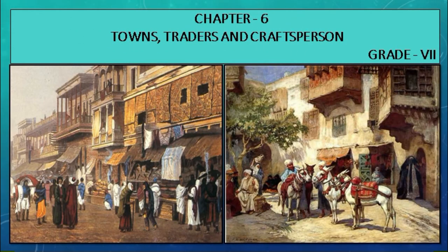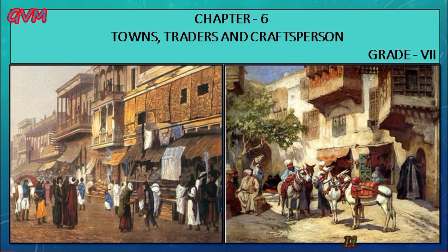Hello everyone and welcome back. This is your history teacher, and this time I am here with a new chapter of NCERT Grade 7 History: Towns, Traders and Craftspersons. During the medieval period there were different towns with different functions, such as temple towns, administrative centers, commercial towns famous for arts and crafts, and port towns.